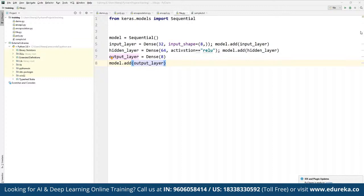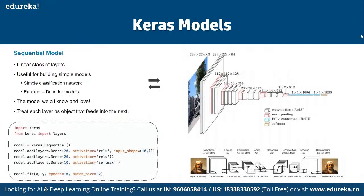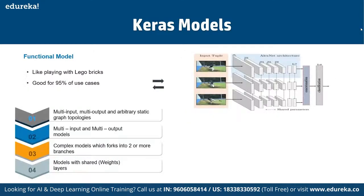We can also serialize the model if needed. Next we have the Functional model. Functional models are good for 95% of use cases where we can have multiple inputs, multiple outputs, and arbitrary static graph topologies. We can define a complex model that forks into two or more branches, models with shared weights, and selected layers.